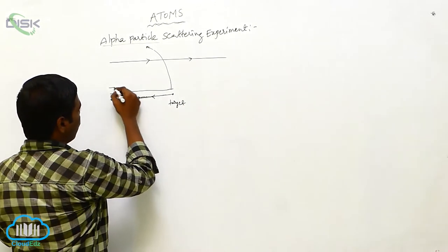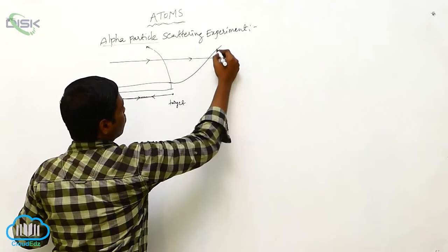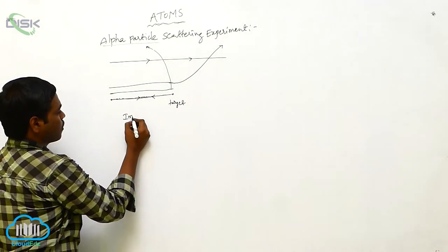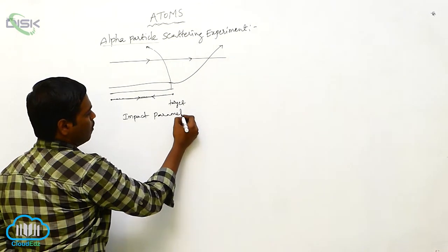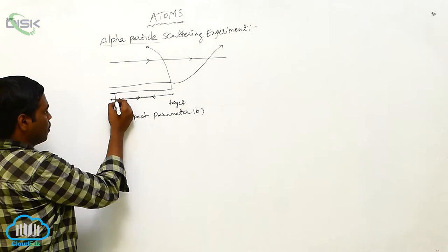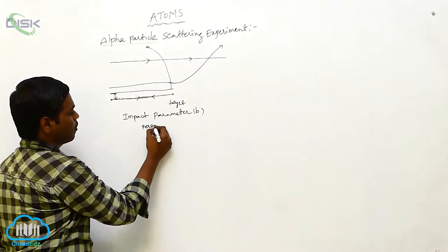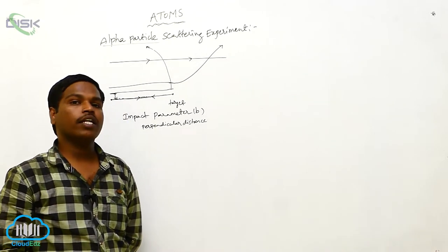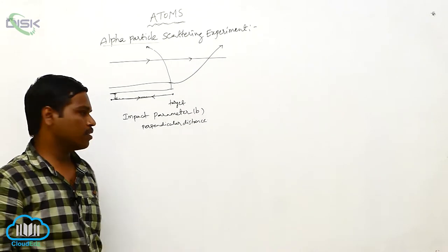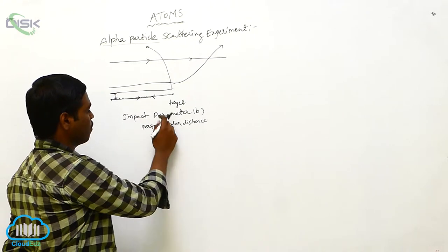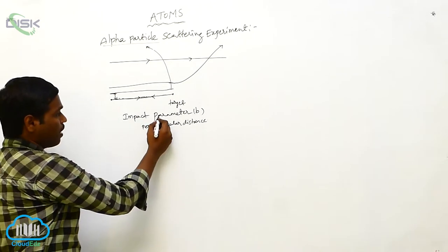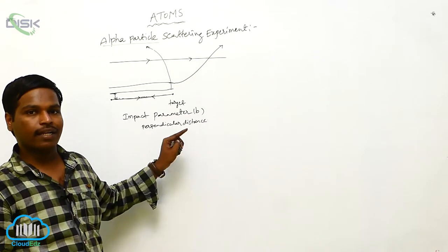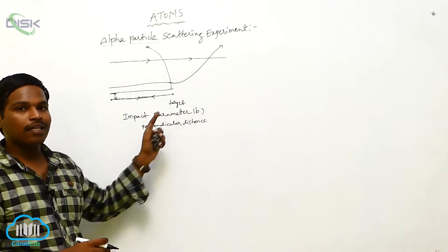Some particles move along a direction, meaning the scattering angle depends on the impact parameter. The impact parameter is denoted by B. It is the perpendicular distance from the initial velocity vector of the nucleus. When the impact parameter increases, fewer particles are scattered. When it is small, there is a large scattering of alpha particles.